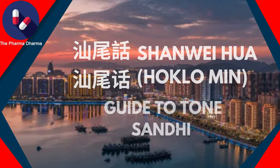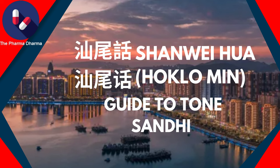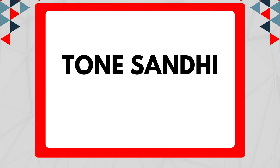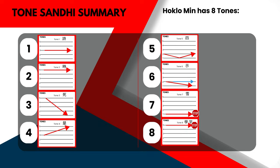Hello everyone, let's take a look at Tone Sandhi in Shanwei Hua. To review, examine the 8 tones of Shanwei Hua below. Remember that tones 7 and 8 can only apply to stopped syllables — that means syllables ending in P, T, K stops or glottal stops ending in H. Tones 1 through 6 can only apply to non-stopped syllables.